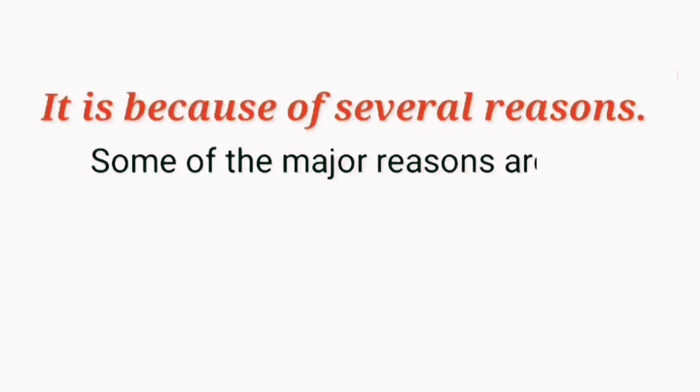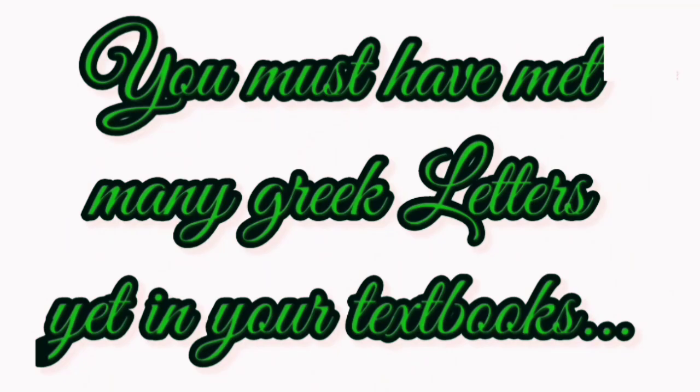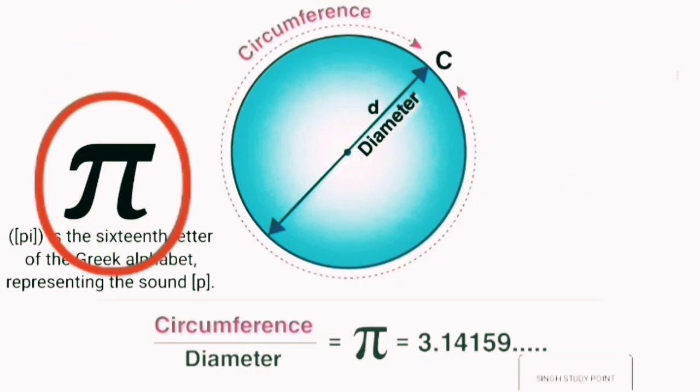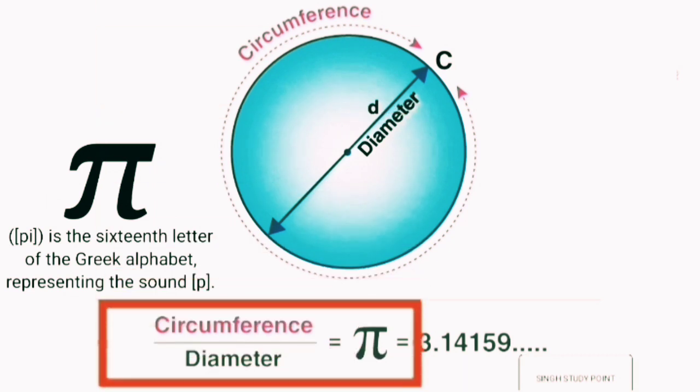Some of the major reasons are that in science, its frequent occurrence can become chaos. How? You met many Greek letters yet in your textbook. You must have met Pi in mathematics, i.e. a Greek letter that represents the ratio of circumference to the diameter of a circle.